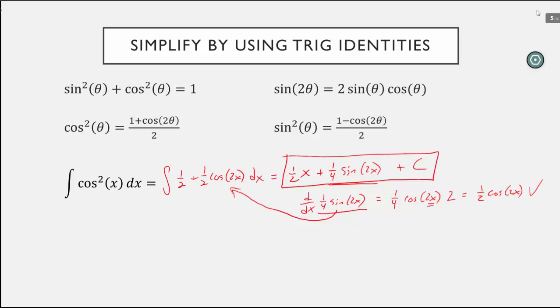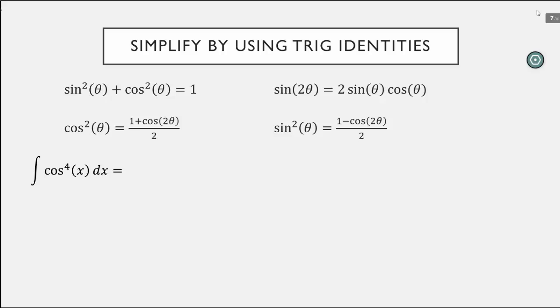Now let's look at a slightly harder problem: the integral of cosine to the fourth power. How do I handle this? The first step is to rewrite it as cosine squared of x quantity squared. Then I can use my identity on that cosine squared term. This is now one half plus one half cosine of 2x quantity squared. Now I can expand that piece: the square of the first thing plus two times the product of those two terms plus the last term squared. So I get one fourth cosine squared of 2x.